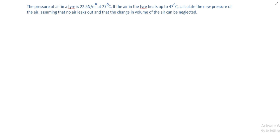The question goes: The pressure of air in a tire is 22.5 newton per meter squared at 27 degrees Celsius. If the air in the tire heats up to 47 degrees Celsius, calculate the new pressure of the air assuming that no air leaks out and that the change in volume of the air can be neglected.